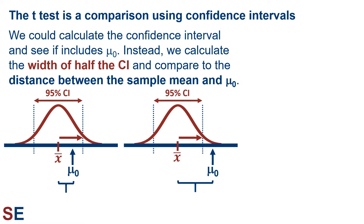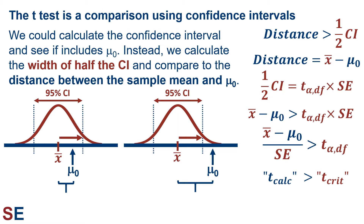We generally do this comparison indirectly. Looking at the equations, we're interested in when the distance is larger than half the confidence interval. Calculating the distance is easy — it's just the sample mean minus mu naught. The size of half of the confidence interval is the t-distribution value corresponding to the alpha we desire and the degrees of freedom, multiplied by the standard error. We compare these two values: whether the sample mean minus mu naught is larger than our t-value times the standard error. Rearranging, the question becomes whether the fraction — sample mean minus mu naught divided by the standard error — is larger than the t-critical value. We call this fraction our t-calculated value, and the other side is tested by seeing if t-calculated is less than the negative t-critical value.